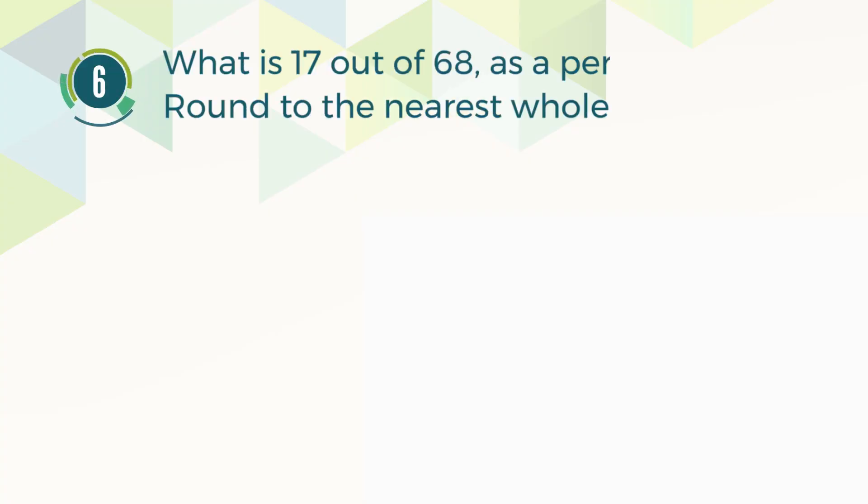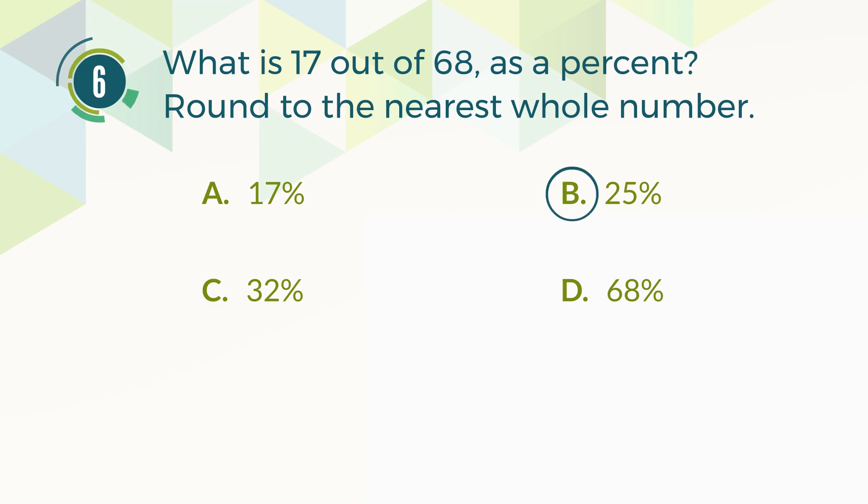Number 6. What is 17 out of 68, as a percent? Round to the nearest whole number. A: 17%. B: 25%. C: 32%. D: 68%. The correct answer is B, 25%.